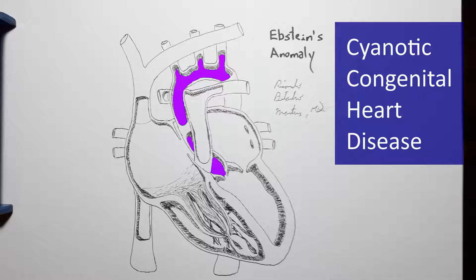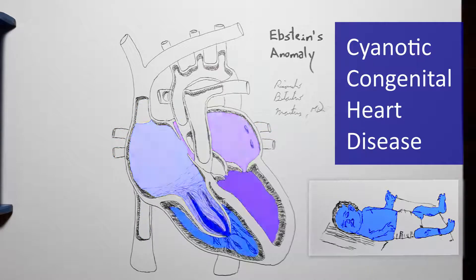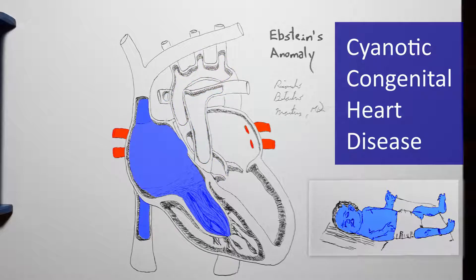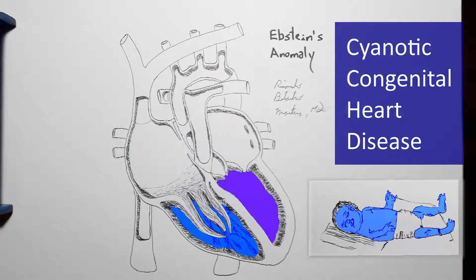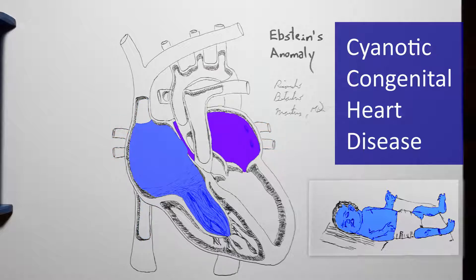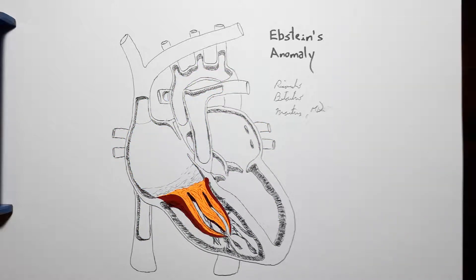Which may present as cyanosis if the oxygen saturation becomes low enough. So, the reason Ebstein anomaly is cyanotic is because the tricuspid regurgitation causes the right atrial pressure to become elevated and blood to flow through the atrial septal defect in the opposite direction it would normally. Ebstein anomaly is also strongly associated with pulmonary stenosis and somewhat associated with congenitally corrected transposition of the great arteries.